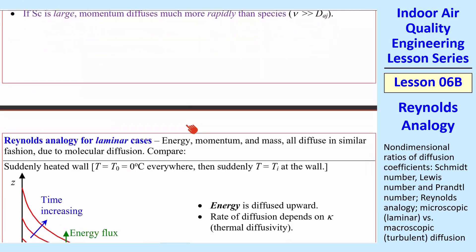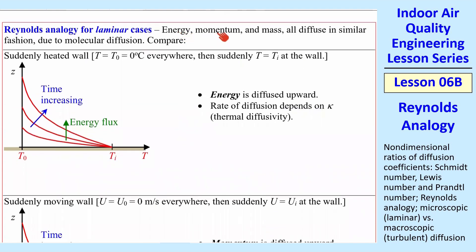So then I want to talk about Reynolds analogy for these laminar cases. And it turns out that energy, momentum, and mass all diffuse in a similar fashion due to molecular diffusion. Let's take, for example, temperature, and suppose we have energy diffusing upward. This is the case where at time T equals zero, we suddenly have a flat plate that becomes hot. So the temperature is T naught everywhere, at some ambient temperature. At time T equals zero, the whole room is at T naught. Suddenly this is at Ti, some initial temperature.